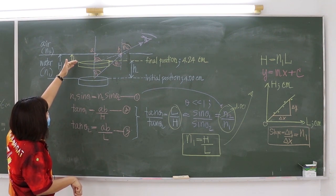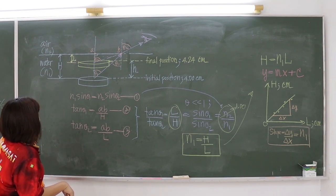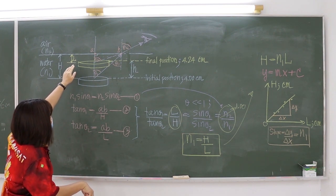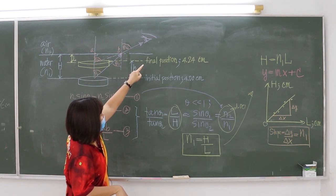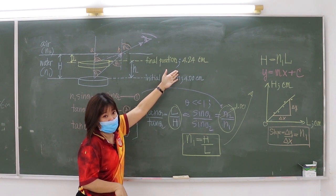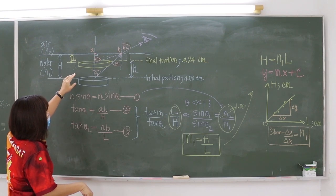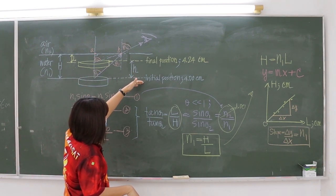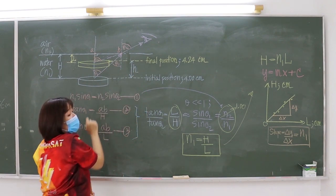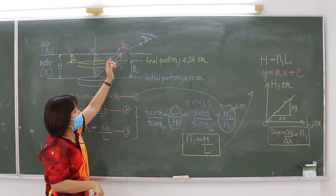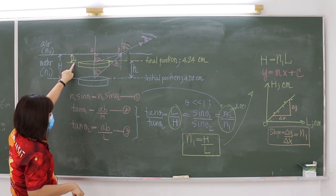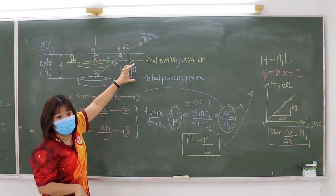You find the position of the image of the coin — the final position — from the experiment. For example, assume we get 4.24 cm. You know the initial position because you set it yourself. The distance difference between initial and final positions is the small h. Apparent depth L equals big H minus small h.